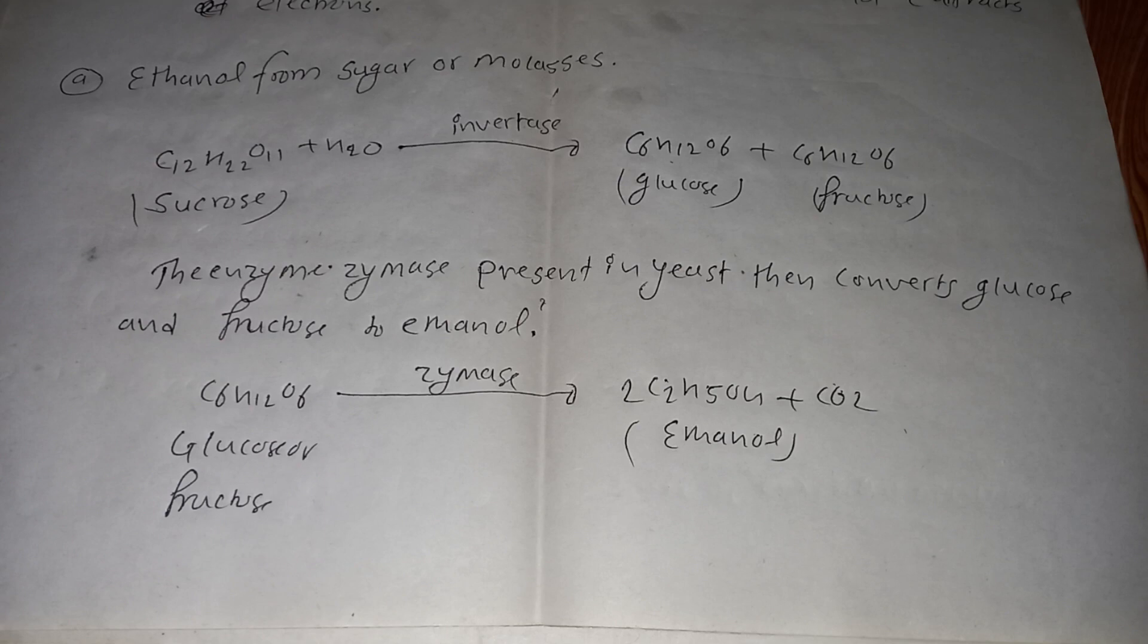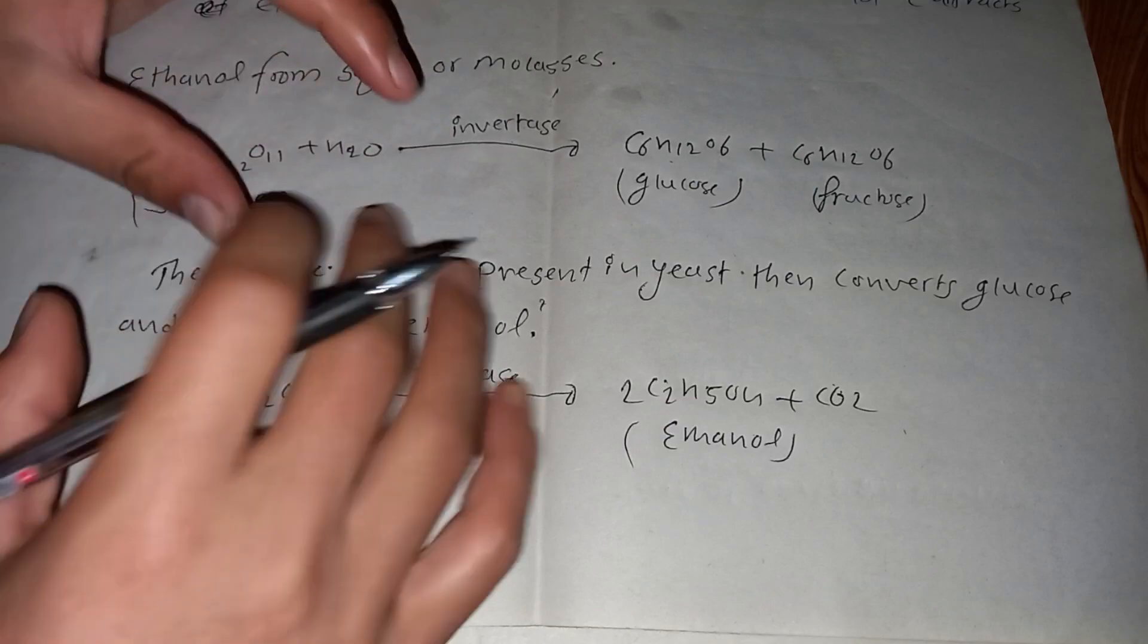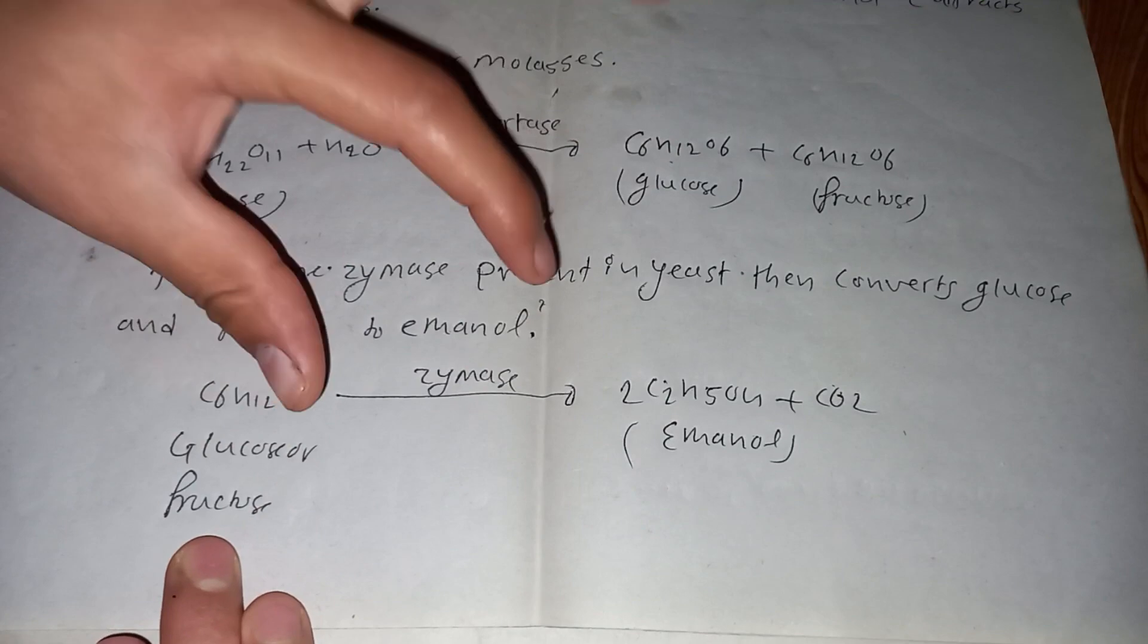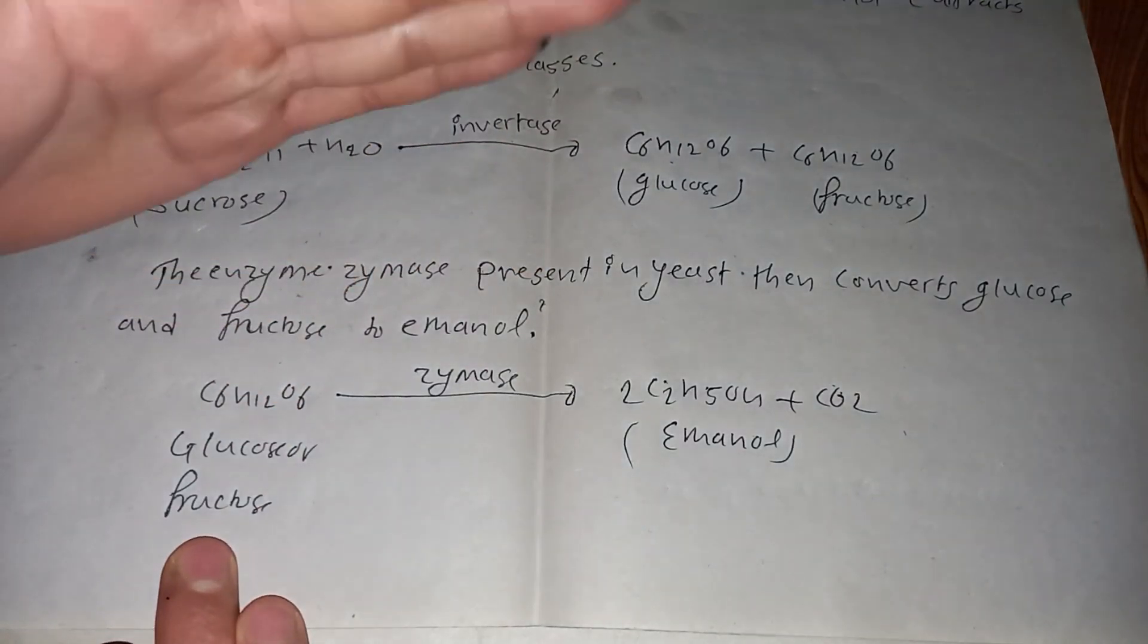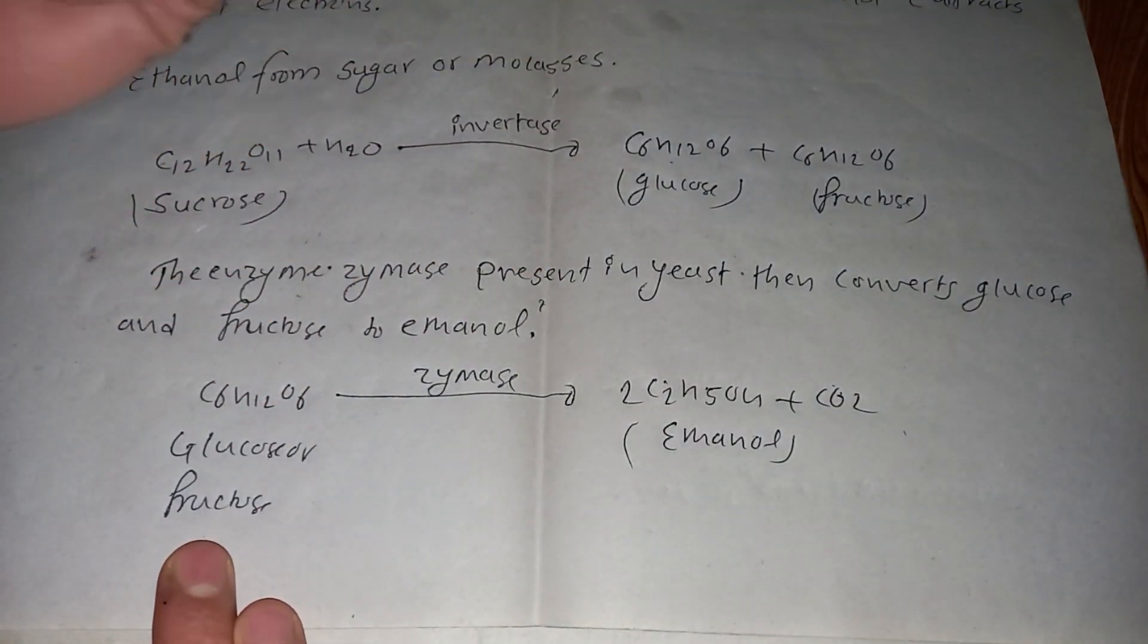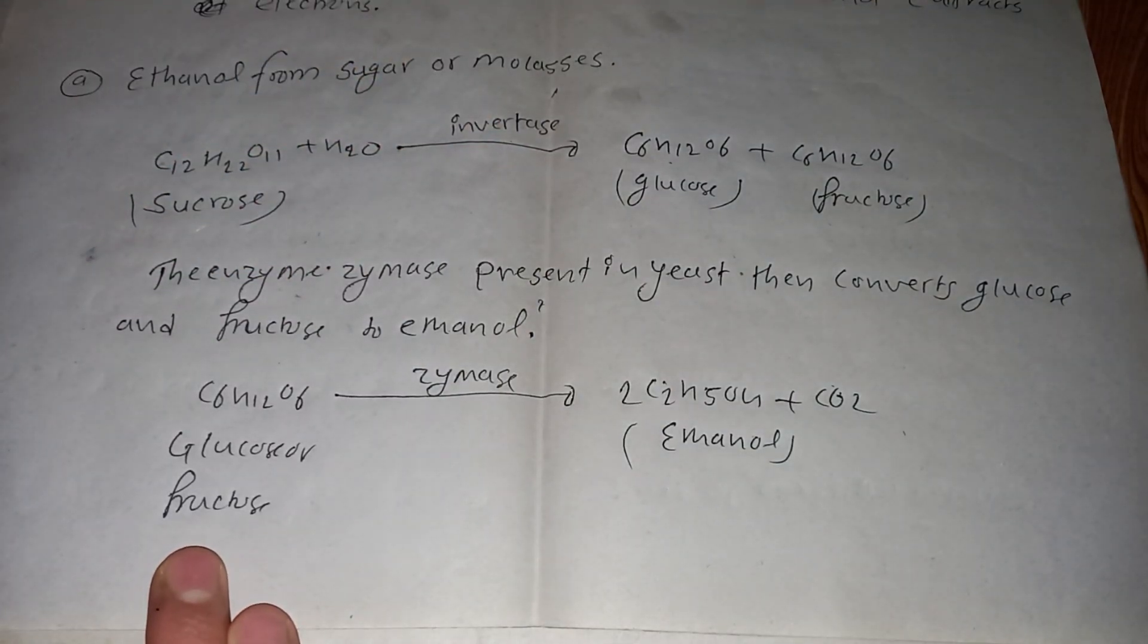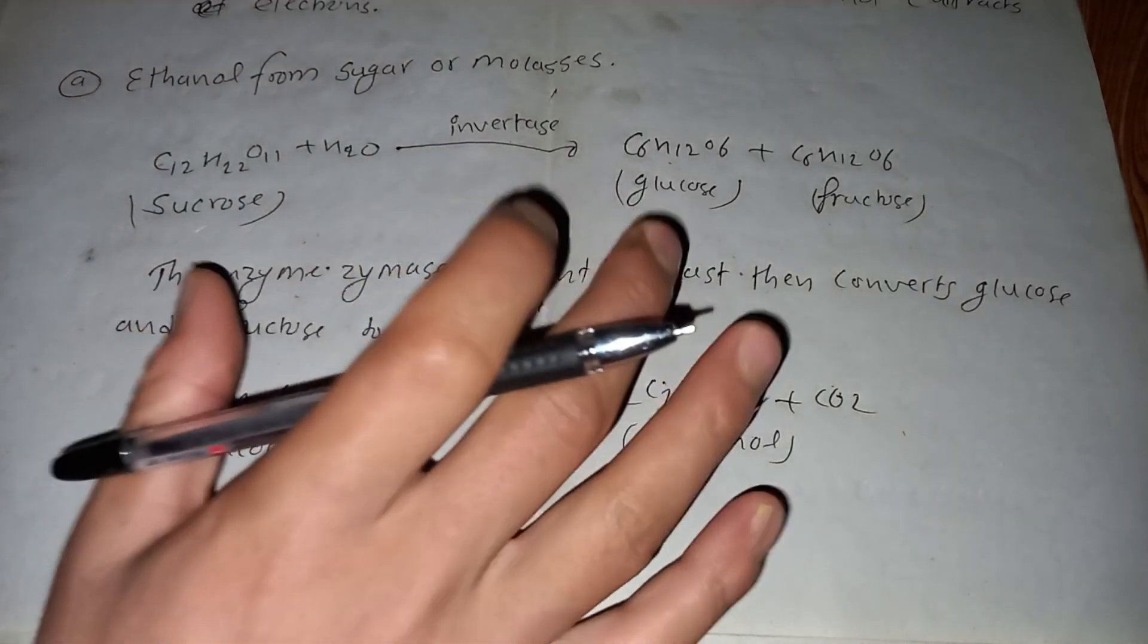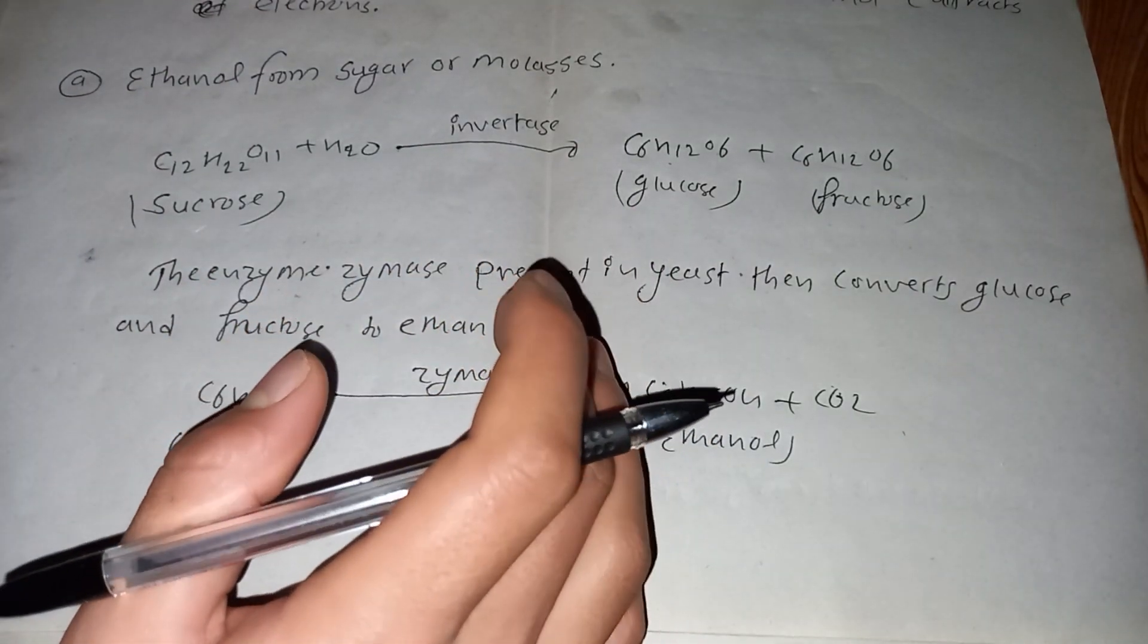How do you know when the fermentation process is completed? It takes about 5 to 10 days for the fermentation process to complete.